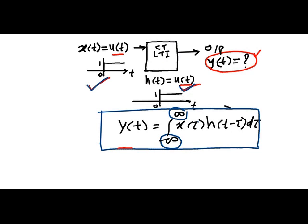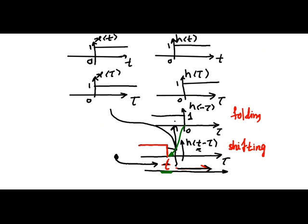We start with the initial sketches of X of T, first unit step function and H of T that is another unit step function. Being unit step function, both signals have unity amplitude. So, in the solution, initially we obtain X of tau and H of tau. This we have changed the index from T to tau.